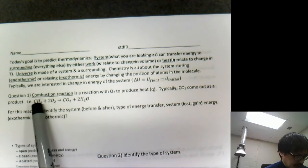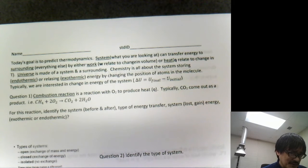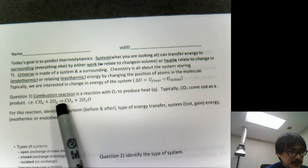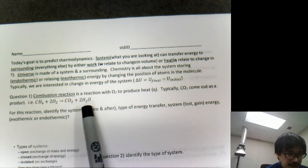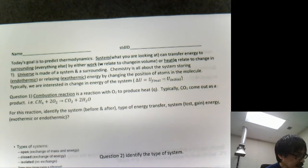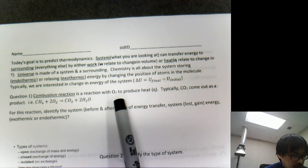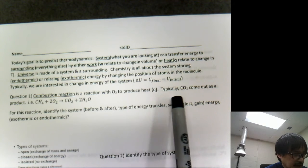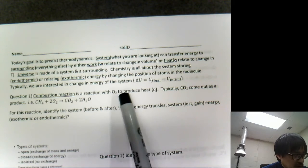So the key word is a combustion reaction. Combustion reaction is literally making a fire and then creating CO2. So methane molecule reacting with oxygen to produce CO2, the carbon dioxide, and then water. Combustion reaction uses O2 to produce heat, and typically CO2 comes out as a product. So another key word is to produce heat.